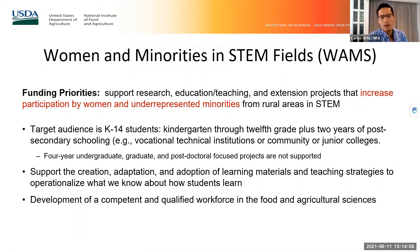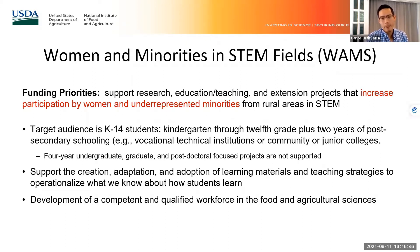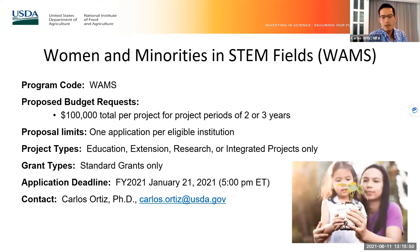The second program is WAMS — Women and Minorities in STEM Disciplines. The goal is to enhance and increase the participation of women and underrepresented minorities in STEM with a special focus on rural areas. We're looking for proposals that support the training of women and minorities from rural areas going into agriculture and food disciplines. The target is K-14 students — from K-12 all the way to community college education. We support the creation and adaptation of learning materials and synergistic linkages, with special focus on women and minorities in STEM.